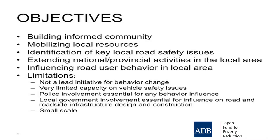A fourth objective might be: it's quite appropriate for a local community program to say we have a similar problem to what's in the national strategy. Our most important problem might be drink driving, and that might be the most important one in the national strategy. If those two coincide, having an objective to extend the national strategy initiatives into your local area is quite a valid objective, and that's a measurable activity that would flow from that.